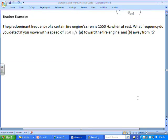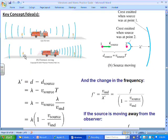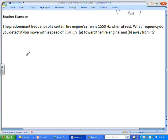And now let's apply that to a practice problem. So this problem reads, the predominant frequency of a fire engine siren is 1550 hertz when it's at rest. What frequency would you detect if that fire engine were moving towards you, kind of like this picture, or away from you, also like the picture?